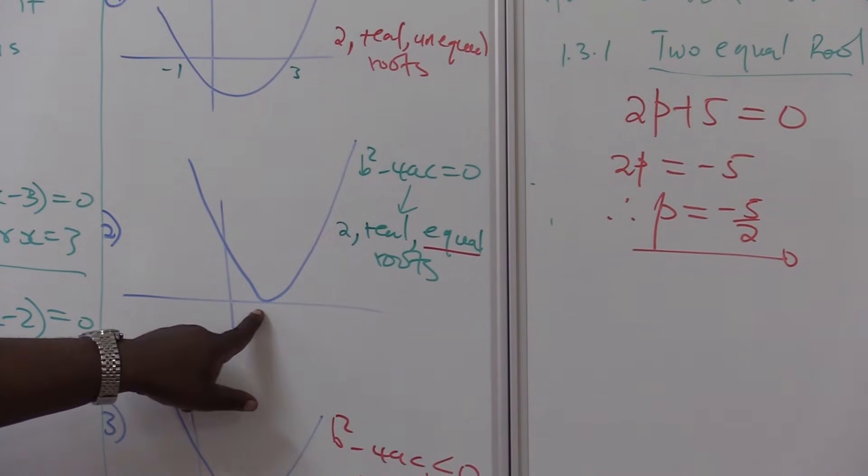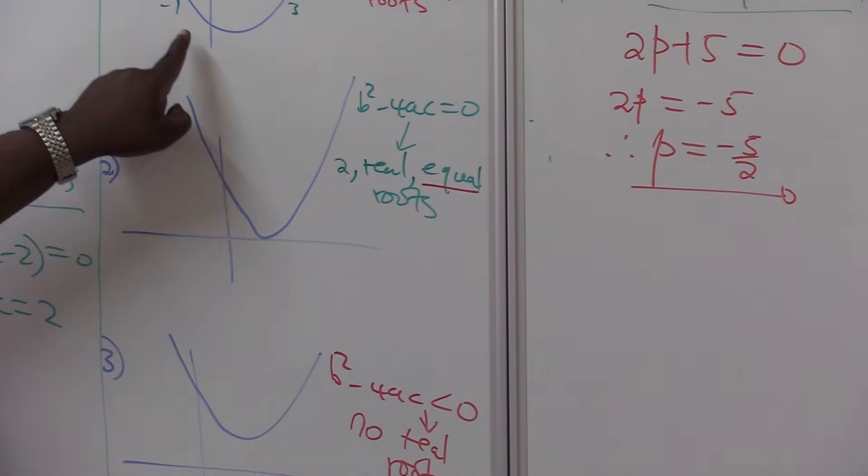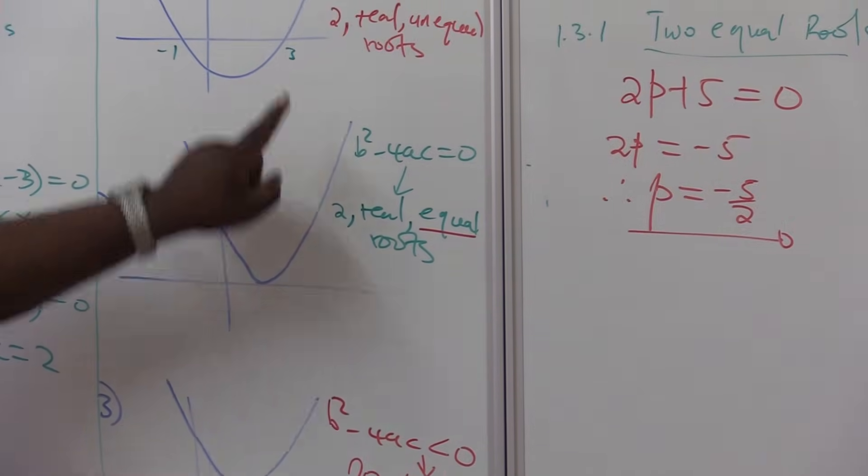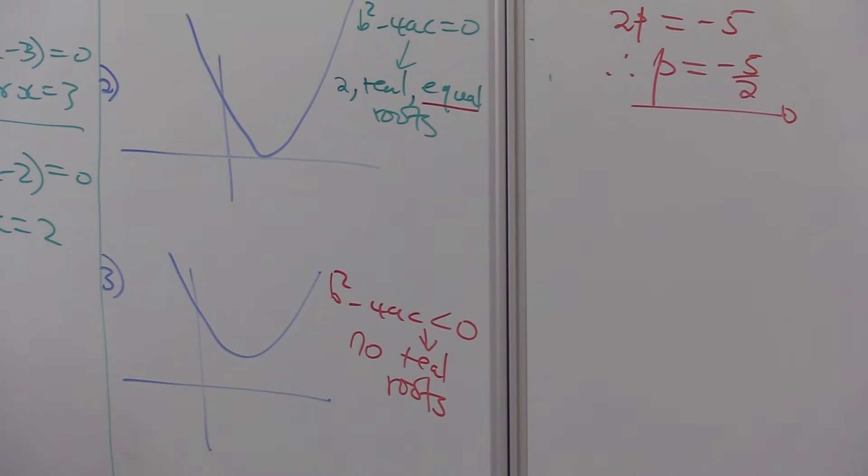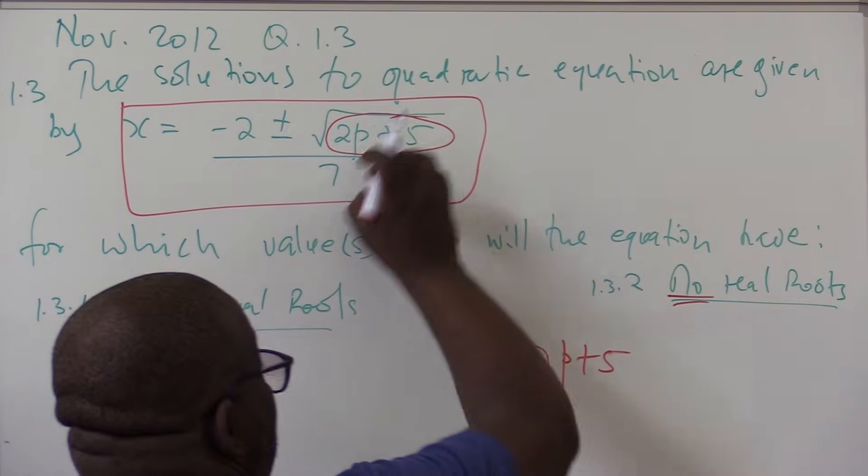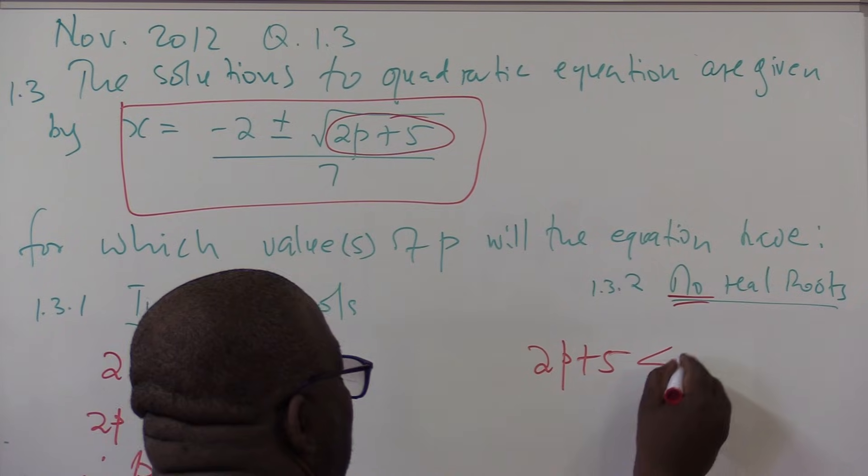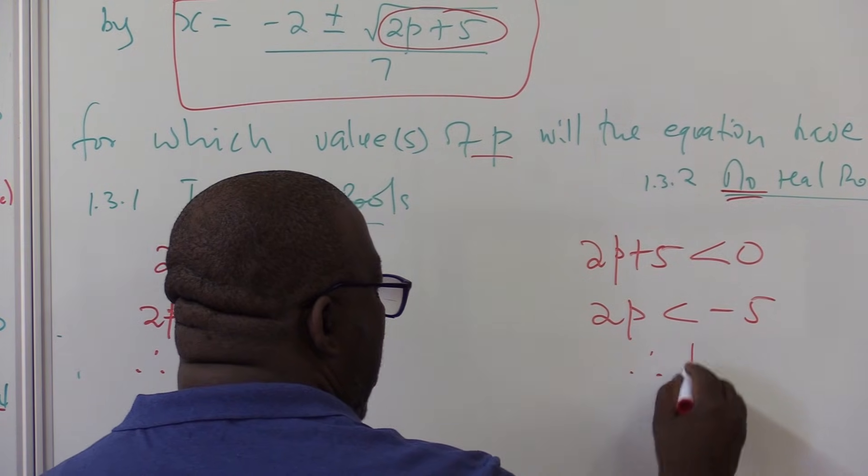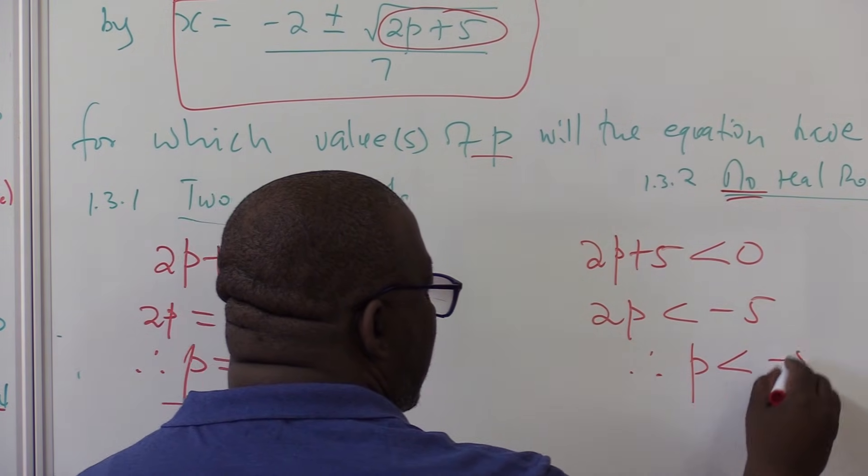The next question. We do have roots here. There are two equal roots. These are two unequal roots. This is the one when we have no real roots. So 2p plus 5, which is our discriminant in this case, it must be negative. Therefore, p will be less than minus 5 over 2.